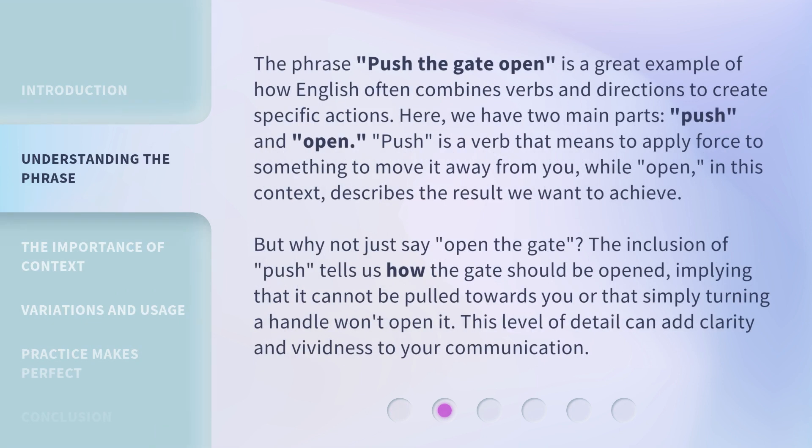The phrase 'push the gate open' is a great example of how English often combines verbs and directions to create specific actions. Here, we have two main parts: 'push' and 'open.' 'Push' is a verb that means to apply force to something to move it away from you, while 'open,' in this context, describes the result we want to achieve.